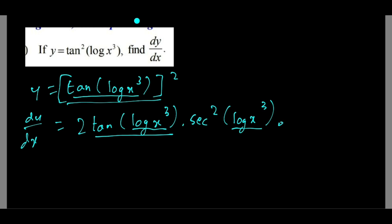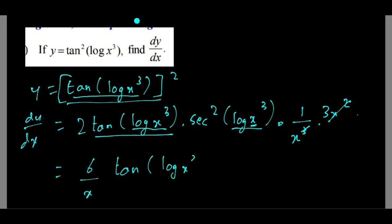Log x cubed derivative is 1 upon x cubed, and then x cubed derivative is 3x squared. So 1 upon x cubed into 3x squared gives 3 upon x. Therefore the final answer is 6 by x into tan of log x cubed into sec squared of log x cubed.